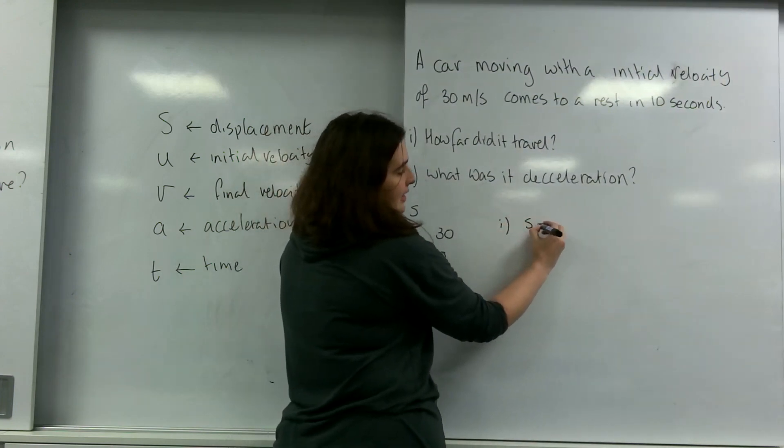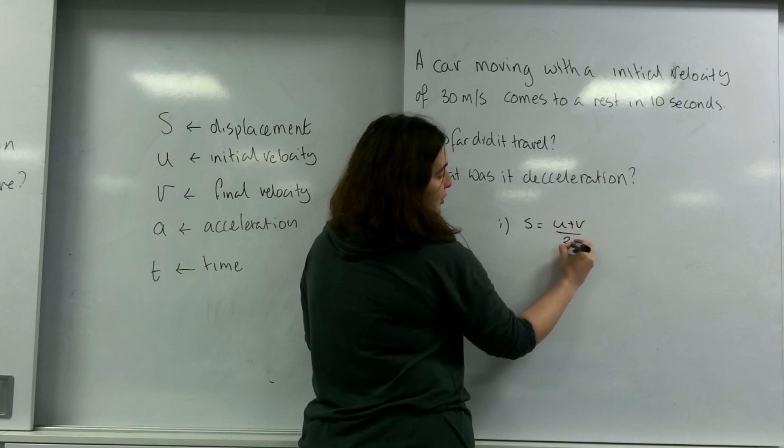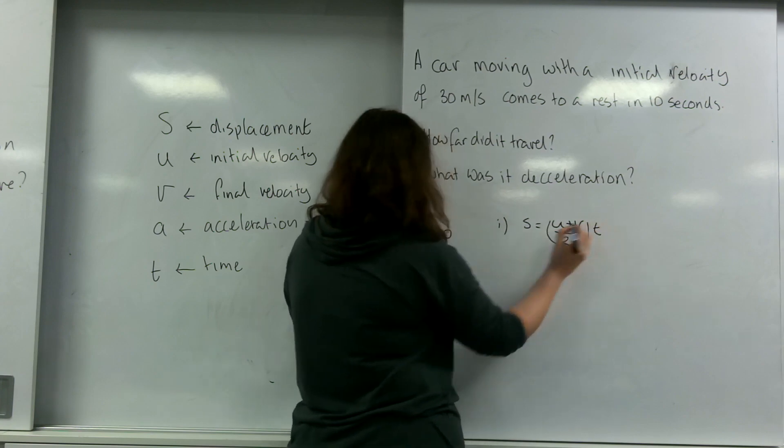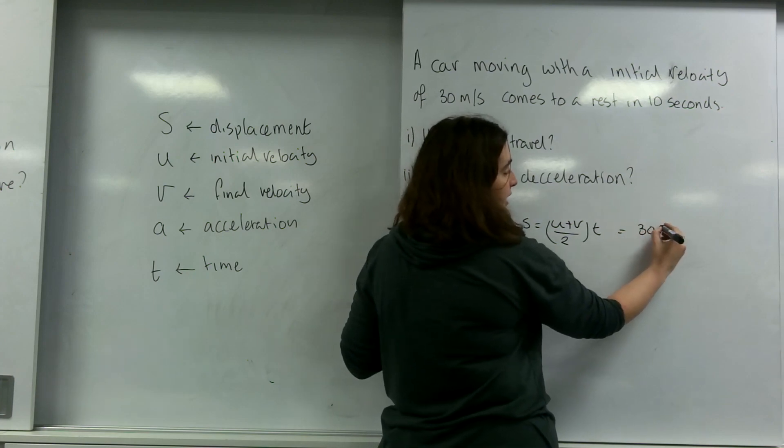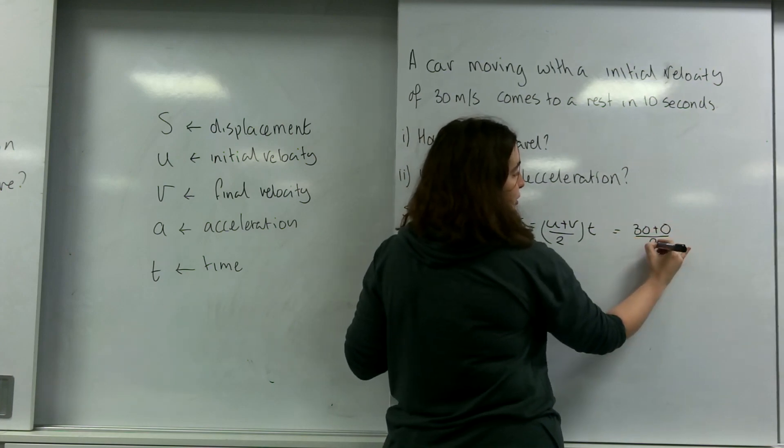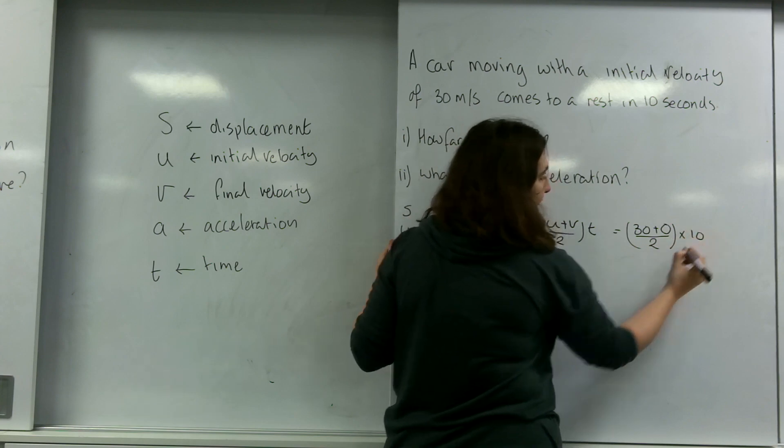So I'm going to use S equals U plus V over 2 times by T. Putting my numbers in, I've got 30 plus 0 over 2 times by 10.